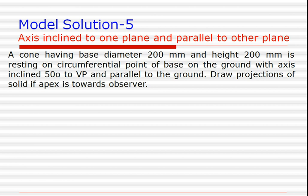The next problem involves a cone with base diameter 200 mm and height 200 mm. The solid is lying on a circumferential point of the base on the ground, with the axis inclined 50 degrees to the VP — similar to problem 3 but with a cone instead of a cylinder. Additional information is given: the apex of the solid is towards the observer. Because the axis is inclined to the VP, we initially take it perpendicular to the VP with the apex towards the observer.